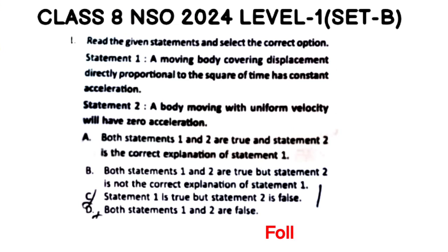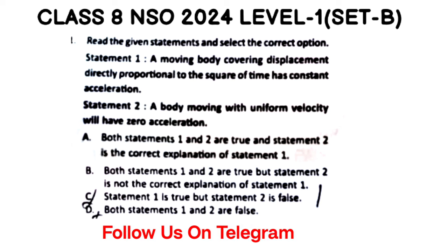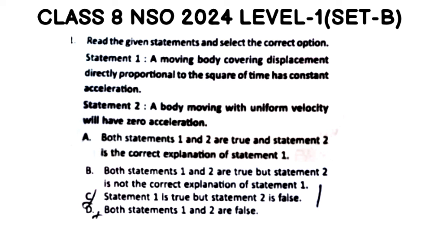Question number 11: Read the given statements and select the correct option. Statement 1: A moving body whose displacement is directly proportional to the square of time has constant acceleration. Statement 2: A body moving with uniform velocity will have zero acceleration. Options: A) Both statements are true and Statement 2 correctly explains Statement 1. B) Both are true but Statement 2 does not explain Statement 1. C) Statement 1 is true but Statement 2 is false. D) Both statements are false.